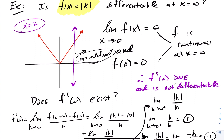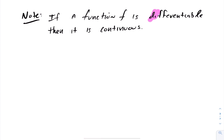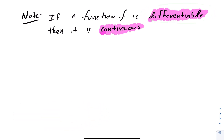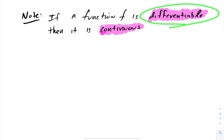So functions can be continuous, as we see here, but that does not imply they're differentiable. However, the opposite is true: if a function is differentiable, then that function is also continuous. So if you have differentiability at a point, you automatically have continuity at that point. The other way — as we just saw — does not work. You can have functions that are continuous but at certain points are not differentiable, as the example of absolute value of x showed.